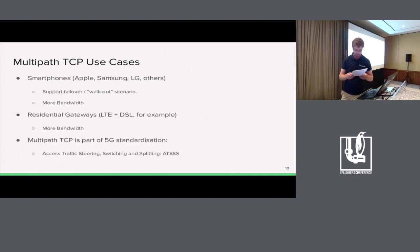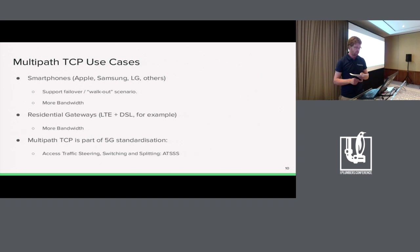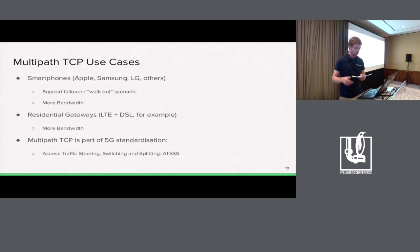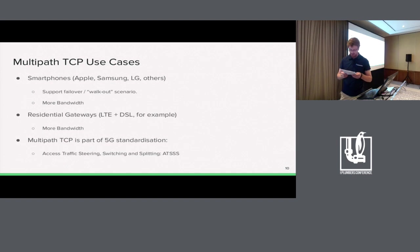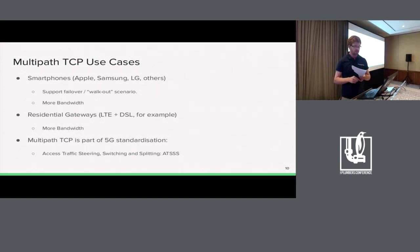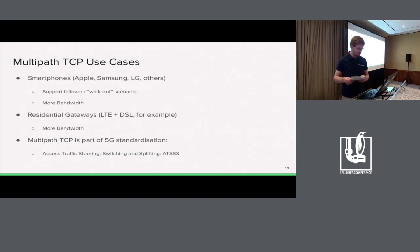Different vendors have added multipath TCP support. Apple was mainly the first, since around 2013, mainly to support failover and this walk-out scenario. Some other vendors also implemented it for more bandwidth, especially in countries like South Korea. There is also another use case we are working on at Tessares: the hybrid residential gateway — a router at home combining both LTE and DSL networks, very useful when you are far from a street cabinet and your DSL connection is poor.